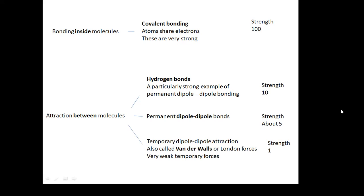So, here's a summary. If I was to say a covalent bond had a strength of 100, then the intermolecular bonds we talked about, well, the hydrogen bonds, which are a particularly strong example of permanent dipole-dipole, they're about 10. Other permanent dipole-dipole bonds are about 5. And then the very weak van der Waals forces, they're about 1. So, these are the different types of intermolecular force and how strong they are.